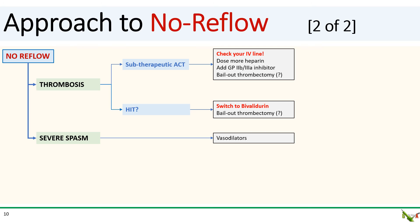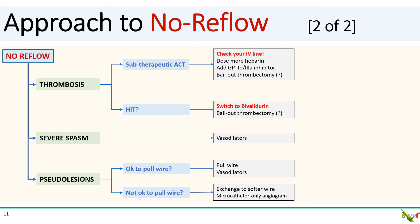Severe coronary spasm can cause the appearance of no reflow and you treat that with vasodilators. Finally, pseudo lesions due to vessel straightening by your wire can cause no reflow in especially tortuous vessels. If it's okay to pull the wire, then just pull the wire and give vasodilators and reassess.